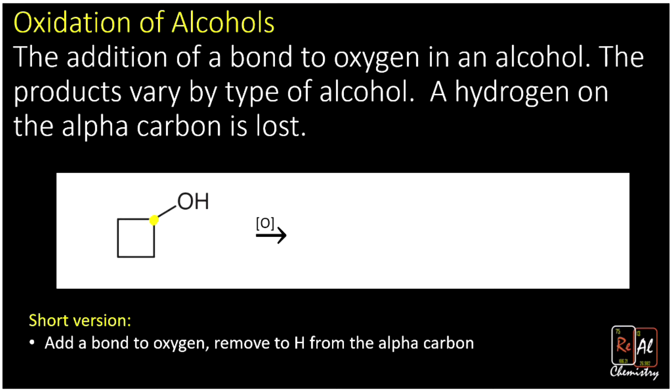Remember that if I count the carbons connected to the alpha carbon, that's one, two, that tells me if it's primary, secondary, or tertiary. So because there's two carbons on the alpha carbon, that's secondary.